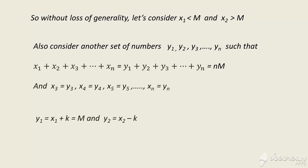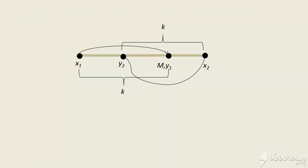We subtract the same constant k from x₂ and name it y₂. By doing that, we ensure that the sum y₁ + y₂ + … + yₙ equals x₁ + x₂ + … + xₙ. As we can see, x₁ and x₂ are far apart from each other, while y₁ and y₂ are closer to each other, and x₁ + x₂ = y₁ + y₂. So by the relation studied earlier, the product of y₁ and y₂ will be greater than the product of x₁ and x₂.